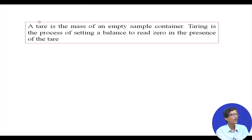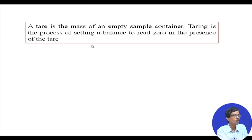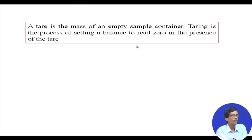Another particular terminology we will see is how we can use the taring process — taring of the weighing bottle used in this particular weighing process. The mass of an empty sample container — that sample container is the weighing bottle. Taring is the process of setting the balance to read 0 in the presence of the tare.